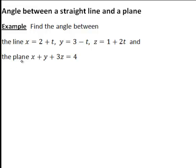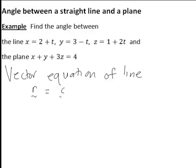The first step is we need to find a vector in the direction of the line. And to do that it can be easiest to write down the vector equation of the line.